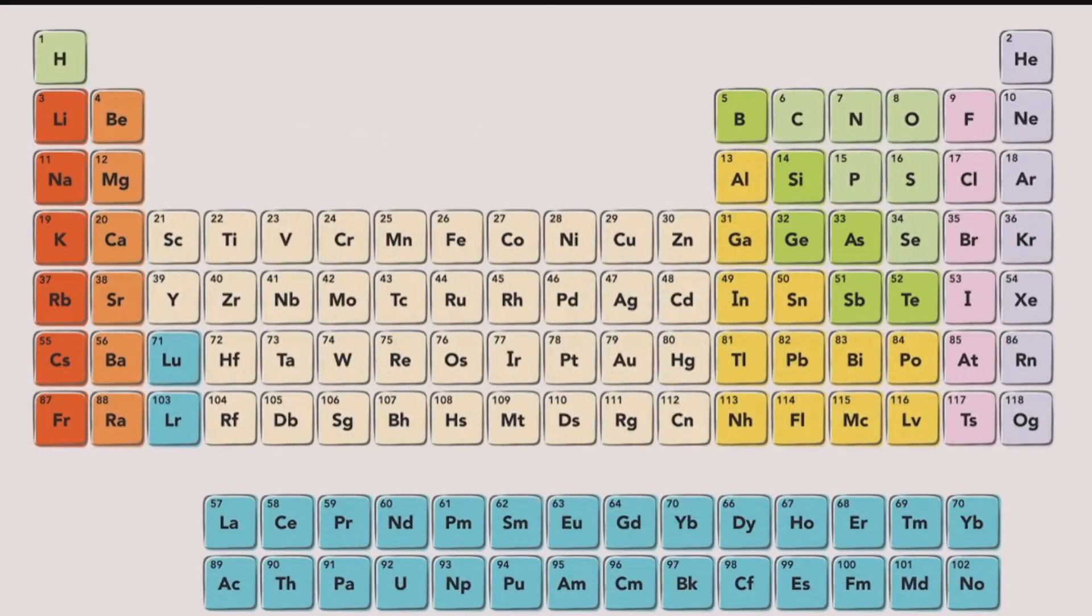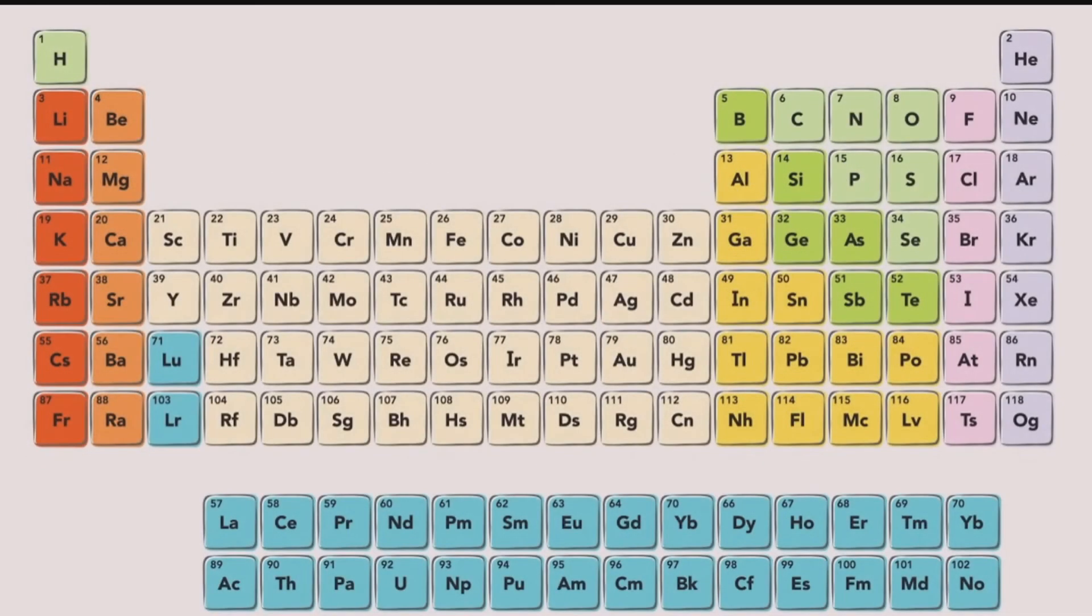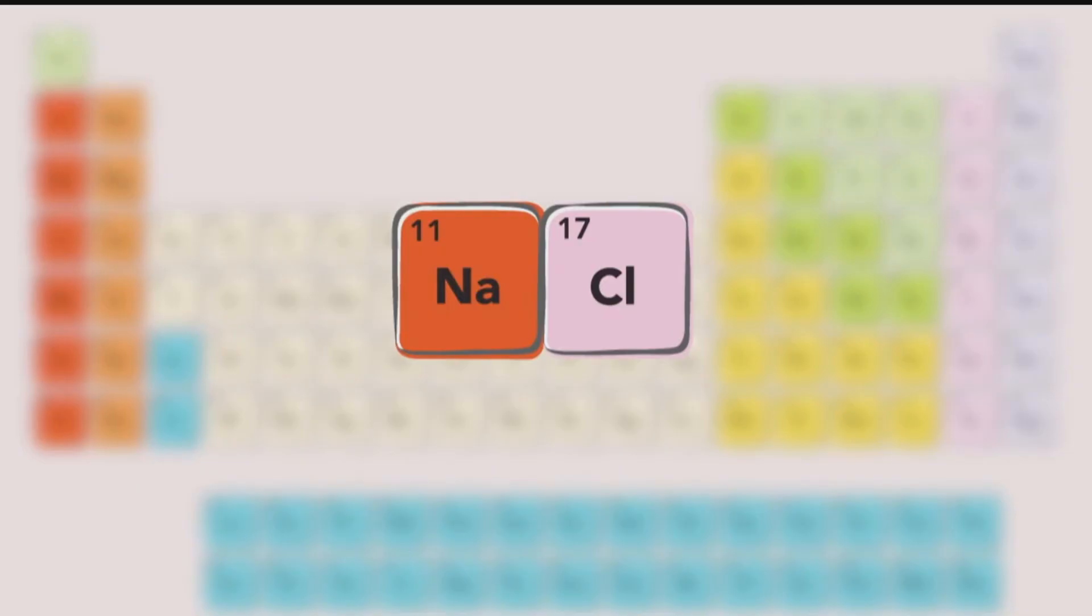The elegant structure of the periodic table allows it to be a very useful tool. It can be used to make comparisons between elements and to find the electron configuration of an atom. The table also allows you to predict what elements might react with each other and in what ratios.